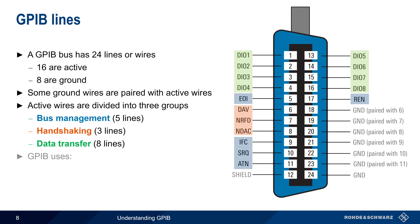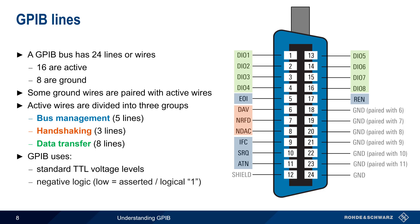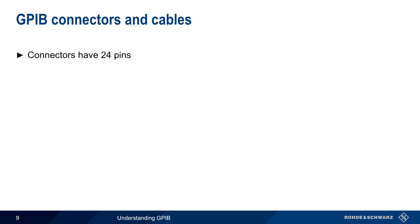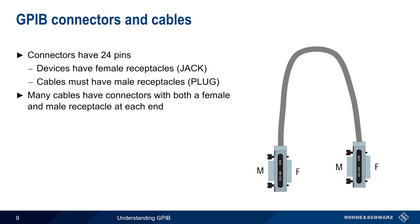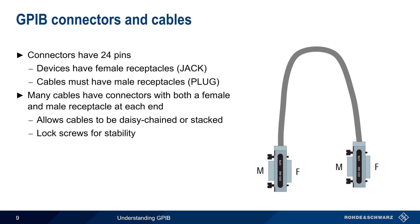GPIB uses standard TTL voltage levels but uses negative or inverted logic — that is, a low physical voltage corresponds to asserted, true, or a logical one. GPIB connectors therefore also have 24 pins. Instruments or devices have female receptacles, and the cables used to connect devices must have male receptacles. In practice, many GPIB cables have connectors with both male and female receptacles on each end, making it easy to daisy chain or stack connectors. They also often have lock screws for stability.